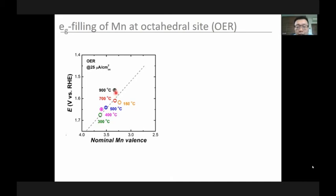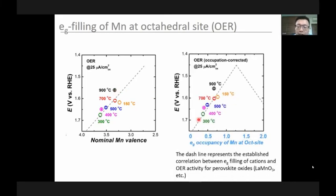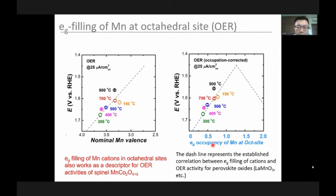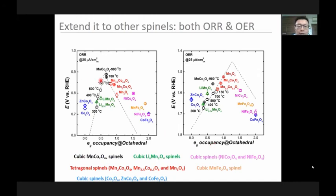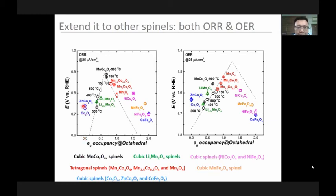For OER, the data points form one part of a volcano shape — again from Professor Shao-Horn's perovskite volcano — and eg electrons matter here as well. We summarized: eg electrons in the octahedral site are key. We also studied 17 other spinel oxides and found they follow this trend: the eg occupancy of the active metal in octahedral sites can determine or at least describe ORR and OER activity. Some data points like cobalt oxides do not fit perfectly because Co3+ in bulk is a low spin state (zero eg electrons), but on the surface it may have intermediate or high spin state, giving some eg electron filling different from the bulk assignment.